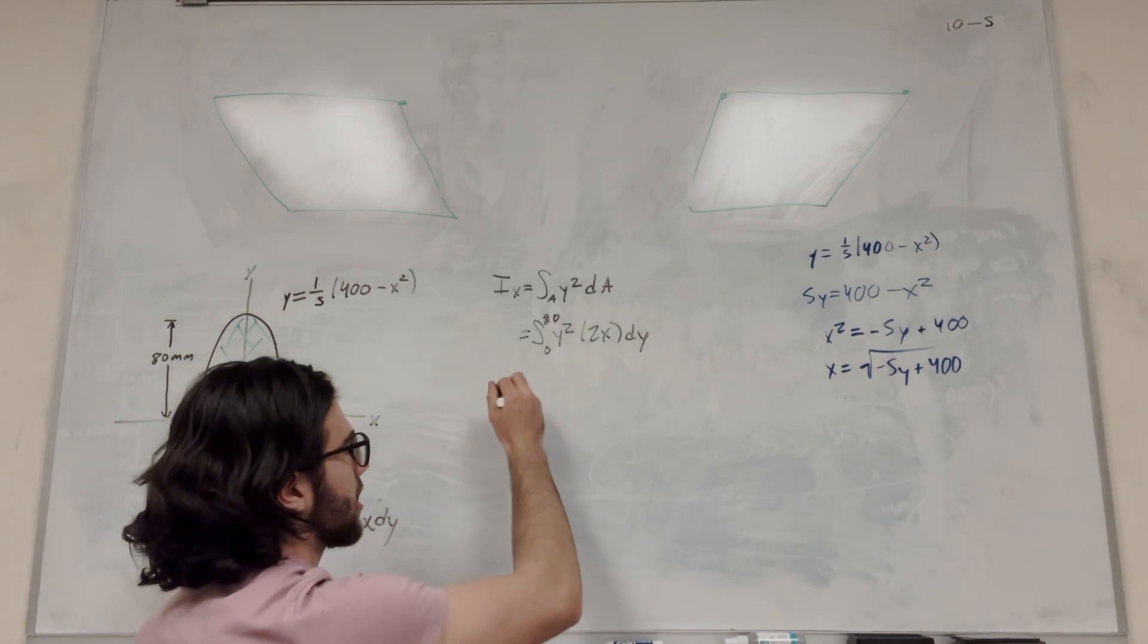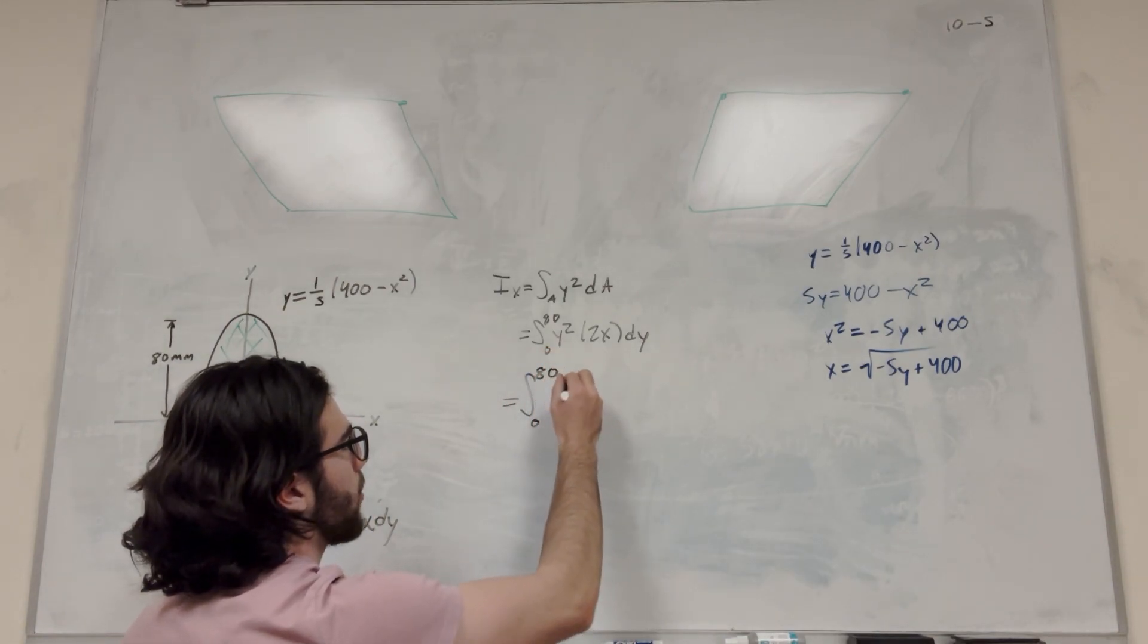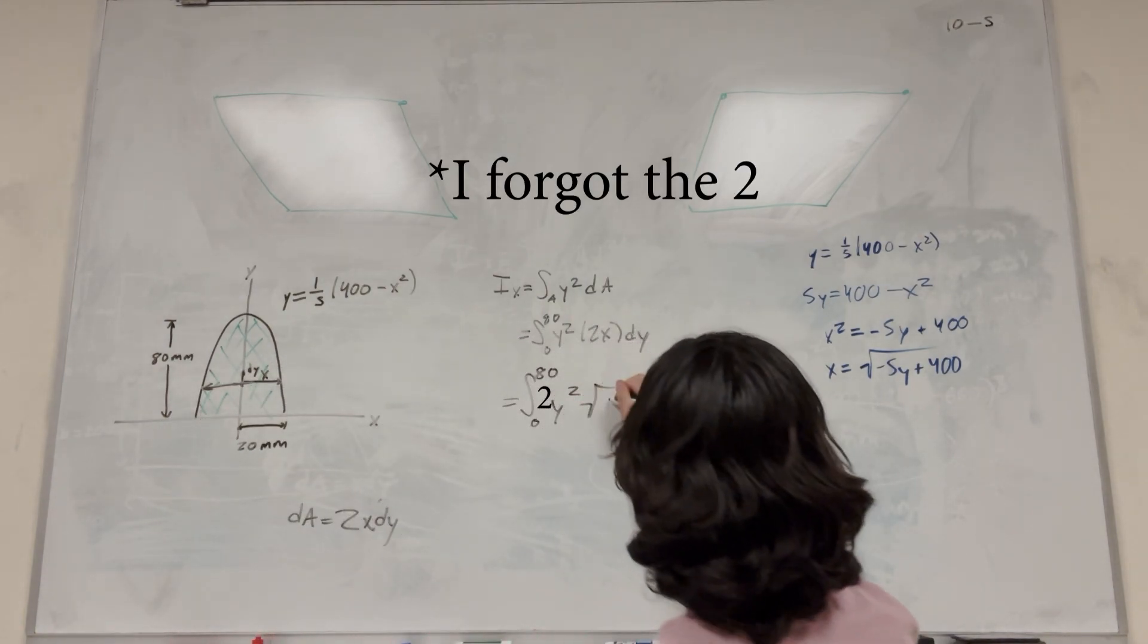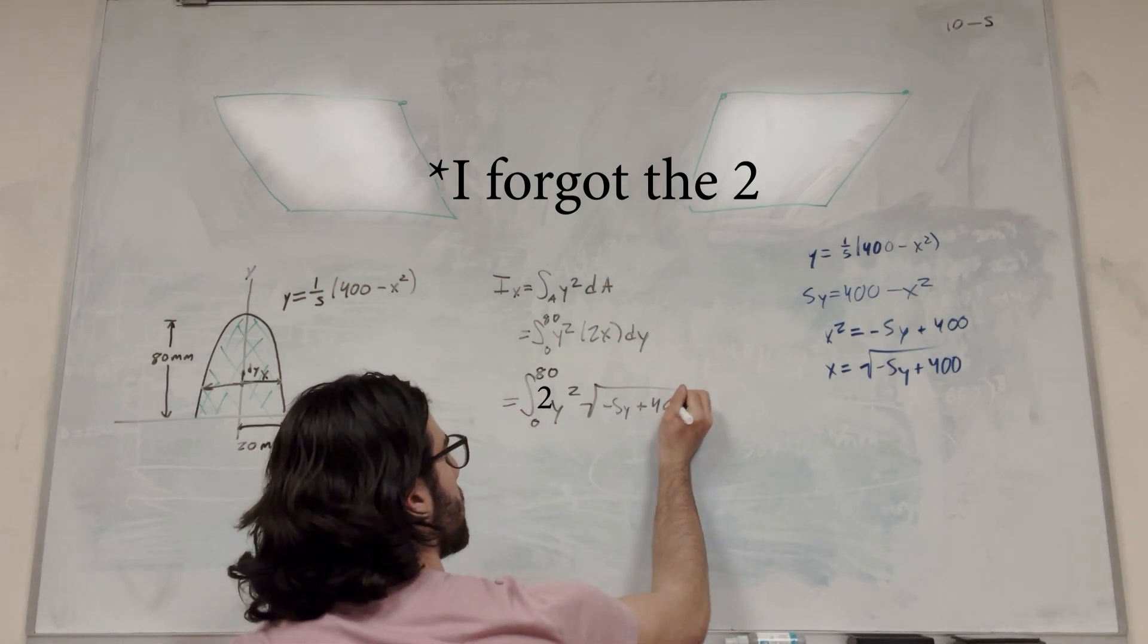So let's go ahead and plug in this x here. So now we have the integral 0 to 80, y squared, square root of negative 5y plus 400 dy.